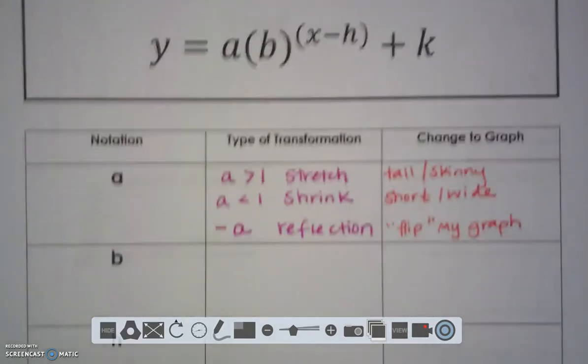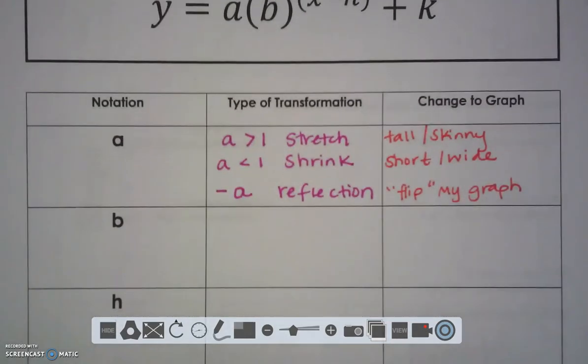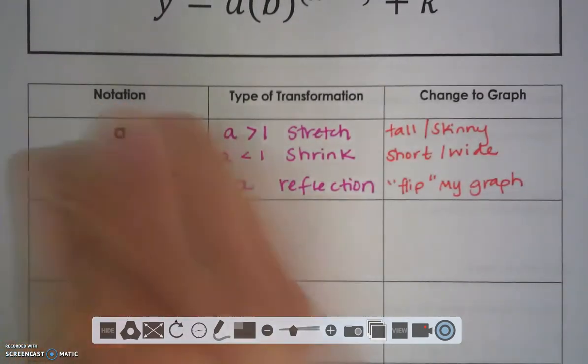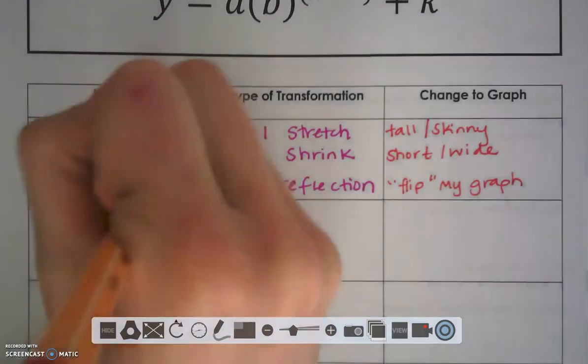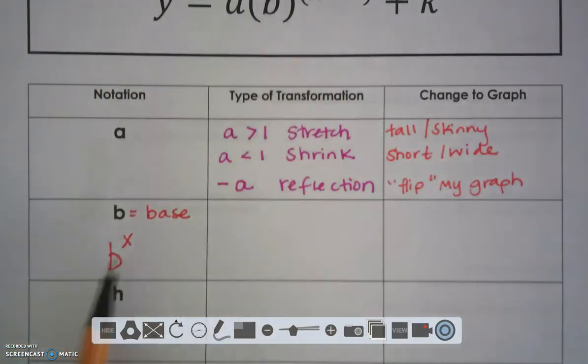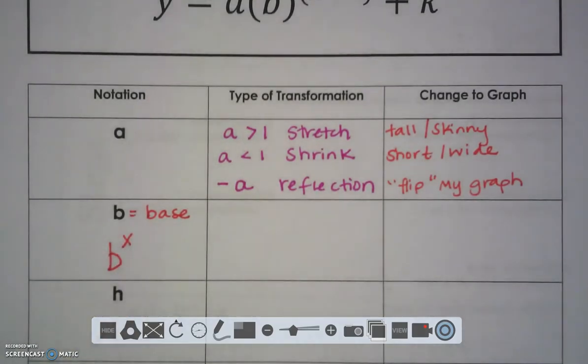Now, B is part of your parent function. So you can look at this as B to the X. But B stands for base. And of course, X is in the exponent spot, which makes this an exponential function.